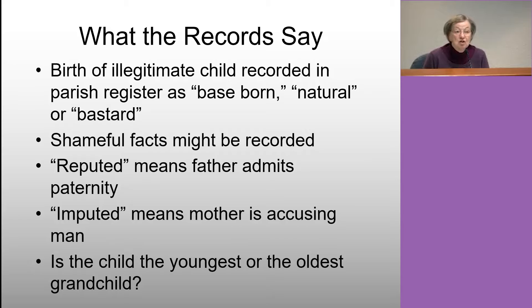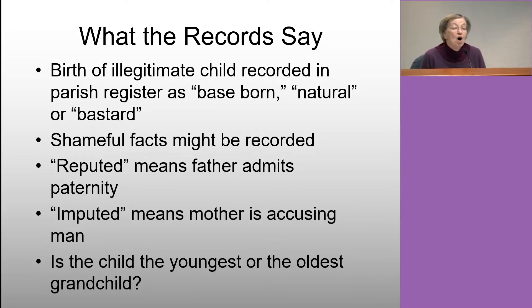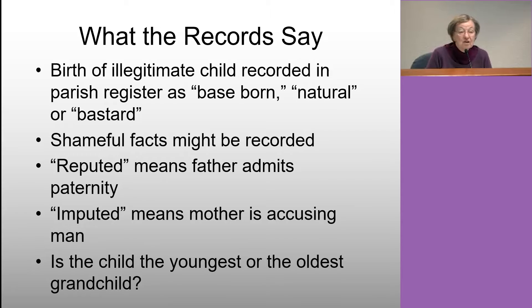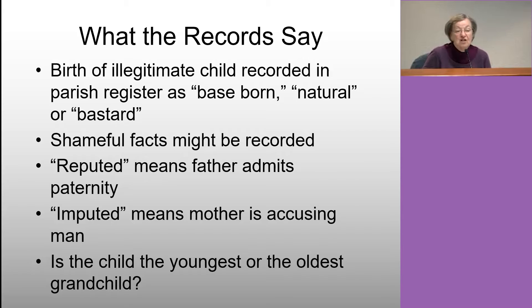There are several records where illegitimate children have been registered with the church or the state. In parish or church records, you might see the terms 'base-born,' 'natural child,' or outright 'bastard.' There are two useful definitions: if a record says the father is 'reputed,' he is admitting paternity; if the father's name is 'imputed,' he has not admitted it and the mother is accusing him.